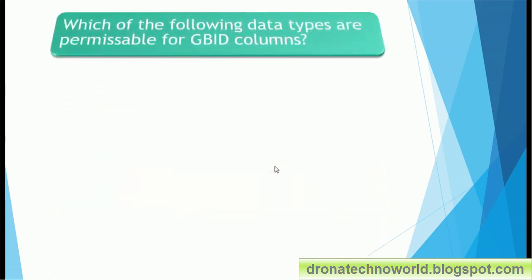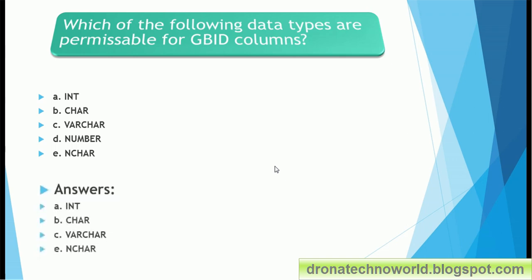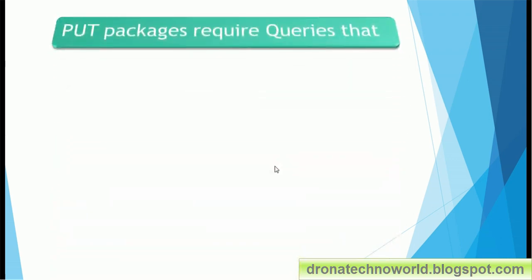Next question: which of the following data types are permissible for the Global ID column? Options are integer, character, varchar, number, and nvarchar. The allowable or permissible data types for Global ID are integer, char, varchar, and nvarchar — number is not allowed for Global ID.